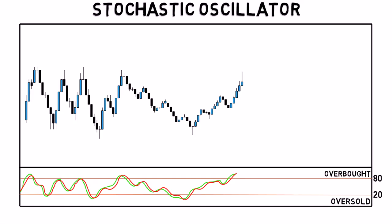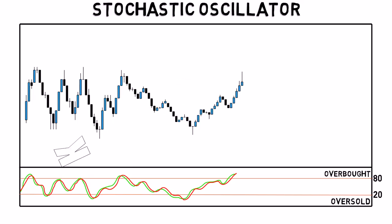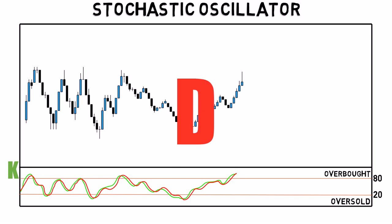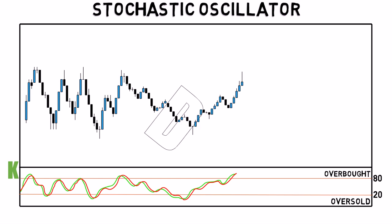The indicator consists of two lines. The K line compares the latest closing price to the recent trading range. The D line is a signal line calculated by averaging the K line values.